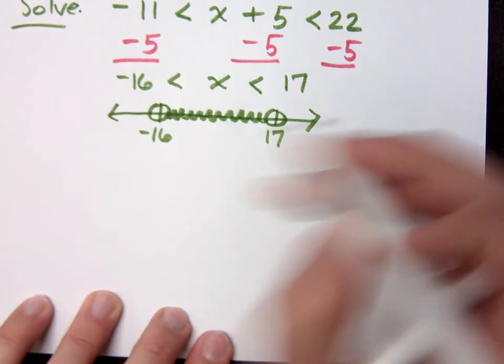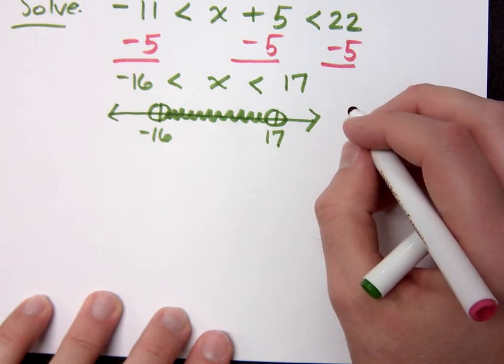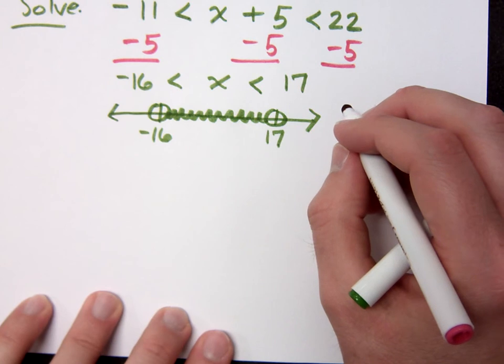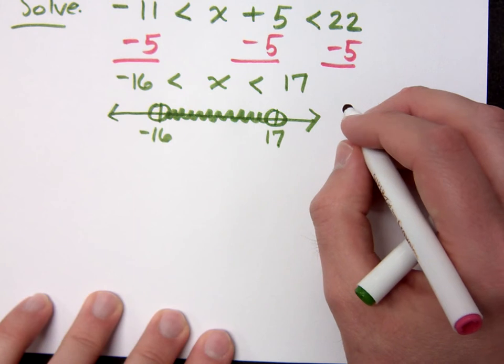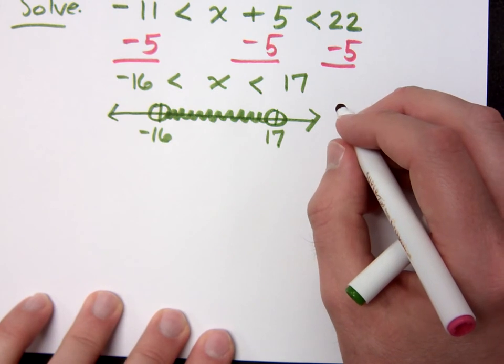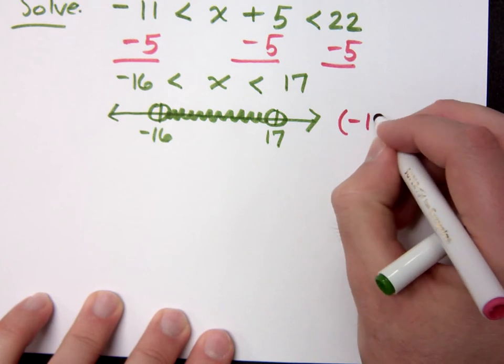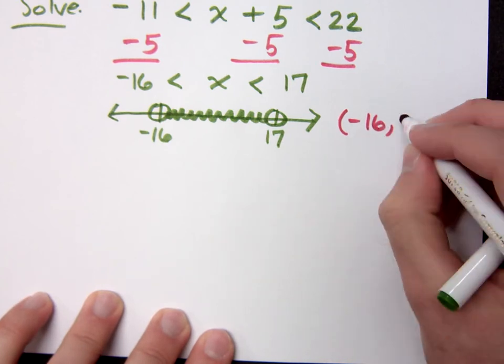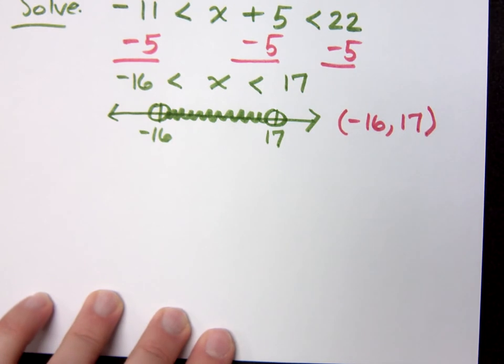I'm not including anything, so I can't use a bracket. Since it's an open circle, I'll use parenthesis. So negative 16 to 17, parenthesis.